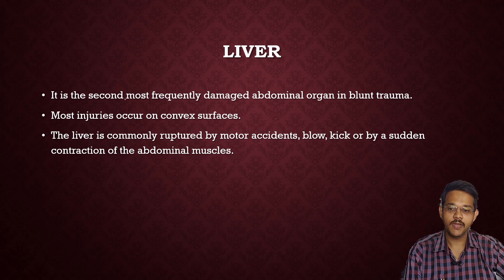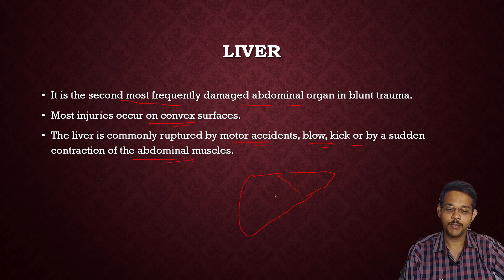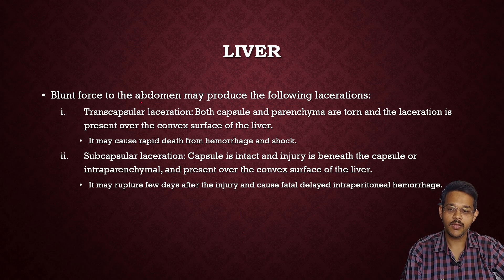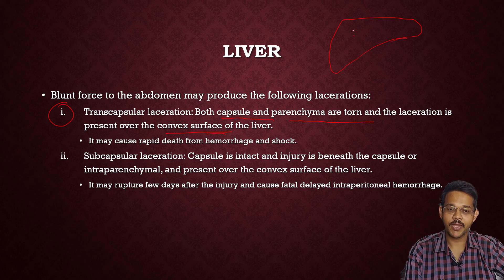The liver is the second most frequently damaged abdominal organ in blunt trauma. Most injuries occur on the convex surface of the liver. The liver is commonly ruptured by motor accidents, blows, kicks, or by sudden contraction of abdominal muscles. Penetrating injuries are more commonly seen in the liver compared to the spleen. Blunt force to the abdomen may produce transcapsular lacerations, where both capsule and parenchyma are torn, present over the convex surface of the liver, which may produce rapid death from hemorrhage and shock.